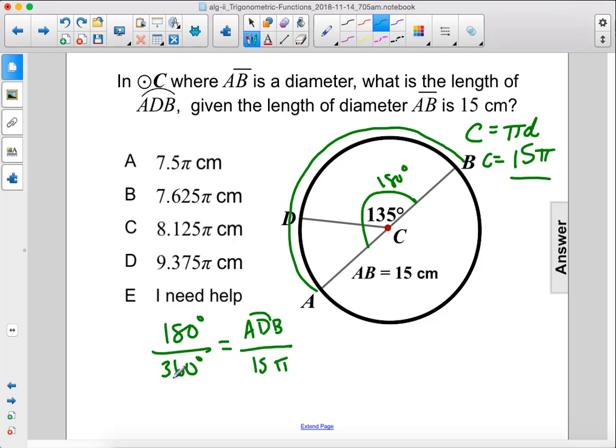Now this, 180 over 360, simplifies to 1 over 2. We do some cross-multiplying, and we see that ADB equals 15π over 2, which is 7.5π. The answer is A.